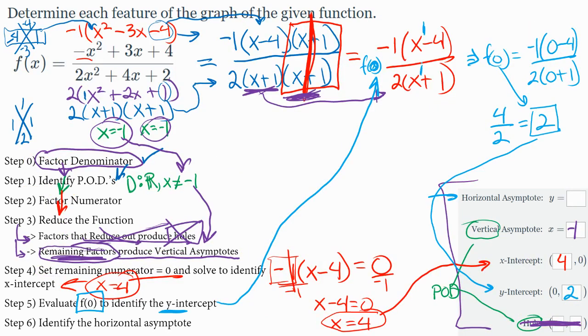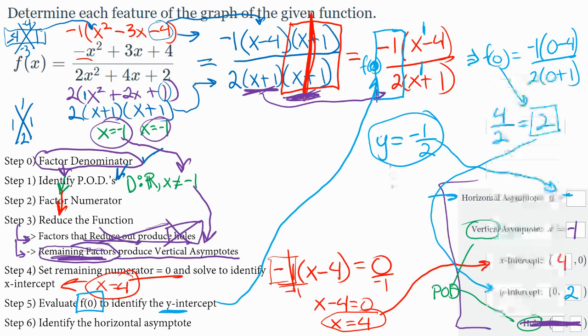And what that means, when the degree and the top and bottom are the same, is you just take your leading coefficients, the a values I call them, and you write y equals negative 1 over 2. This is your horizontal asymptote. Negative 1 half is what we're looking for. Those are the five key details for this graph that we were looking for.